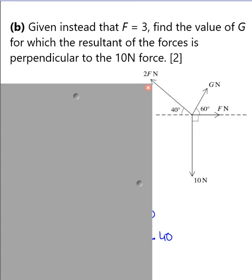The second part of the question: In this question the force F is given to you which is 3 Newton, and you have to find the value of G for which the resultant of the forces is perpendicular to the 10 Newton force. Now this is something very important. You need to understand what does it mean—what is it saying?